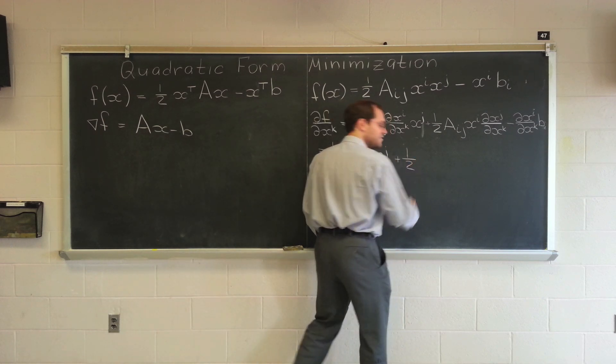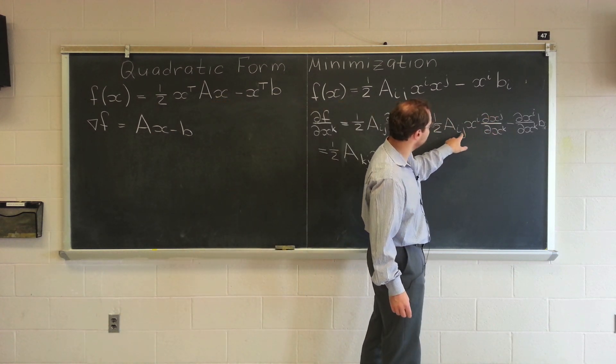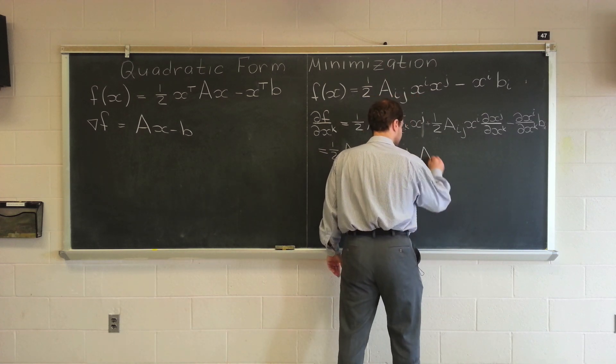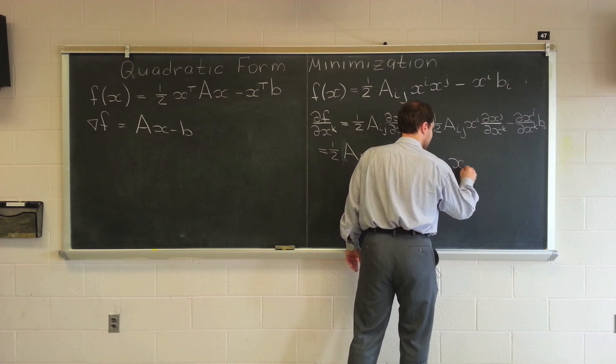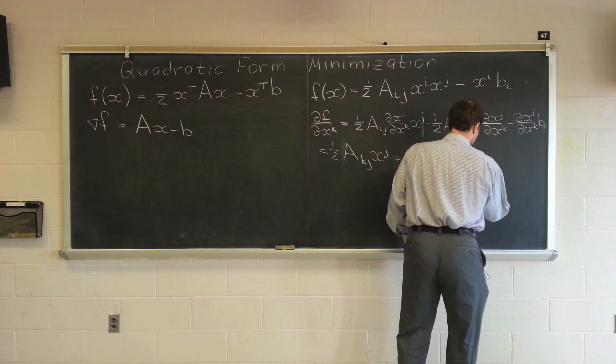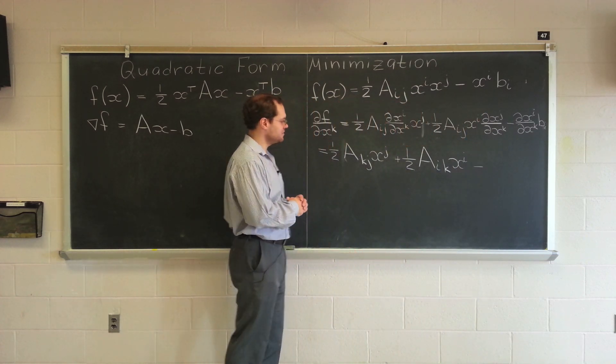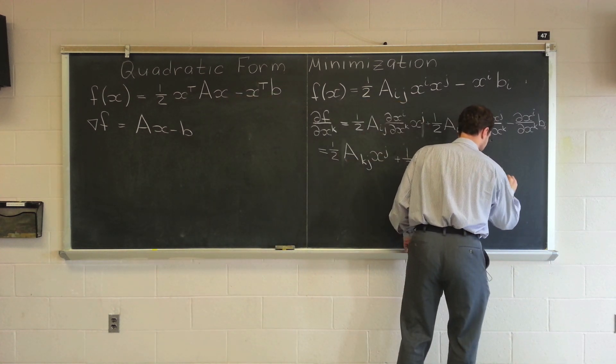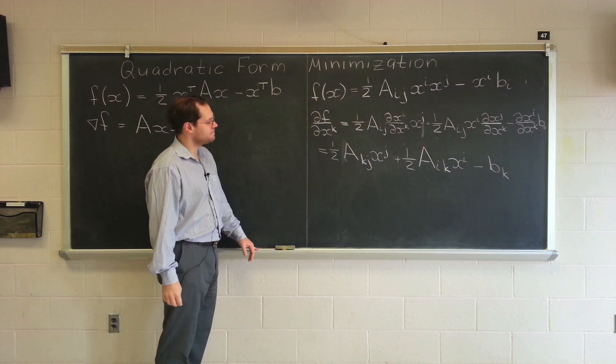Plus one half A_ik. So, this will be delta_jk. J will be renamed into k. So, it's one half A_ik x_i. Minus, somebody else tell me what's that term going to simplify to. B_k.